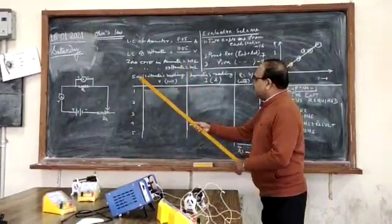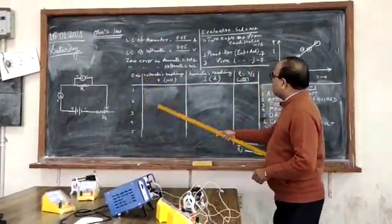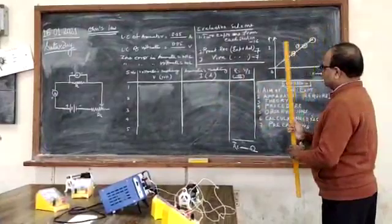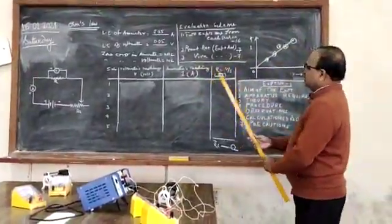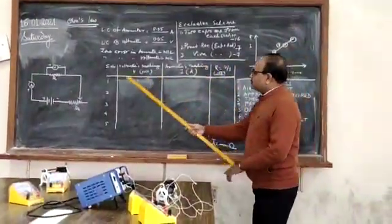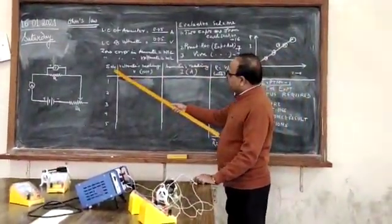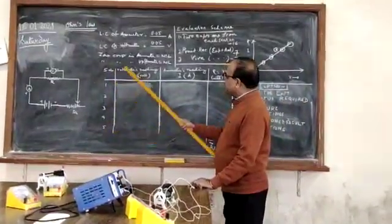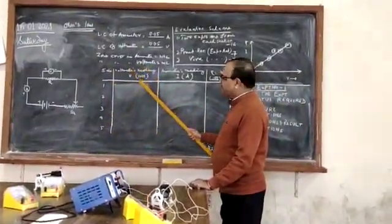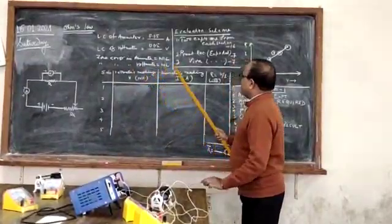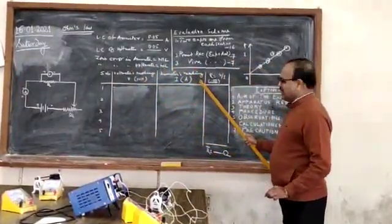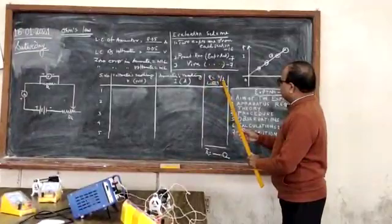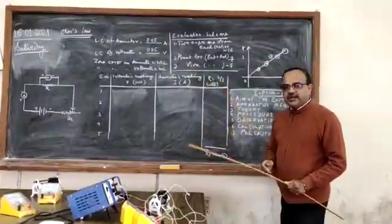After that, here is the observation table. It is very simple: serial number, we have to take five readings — voltmeter reading in volts, ammeter reading in amperes, and here resistance V by I, which we will find out with the help of the graph.